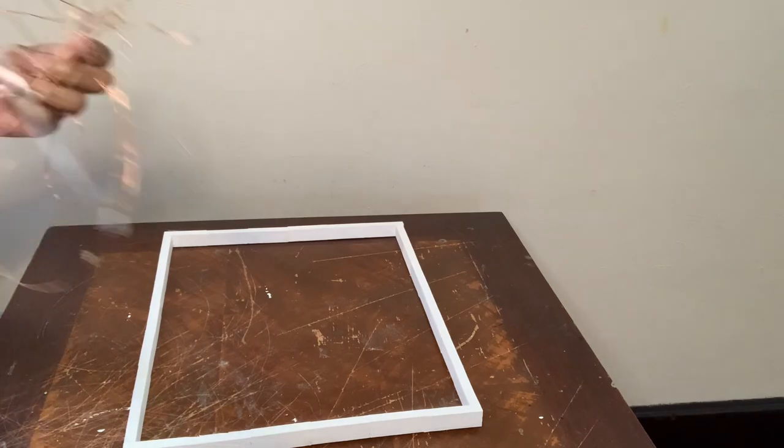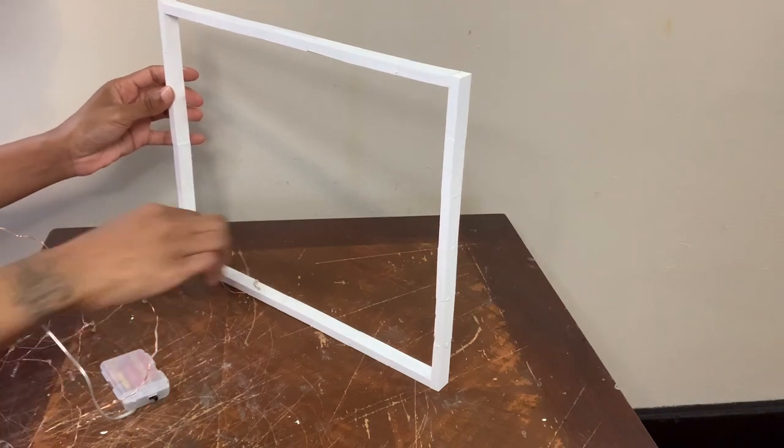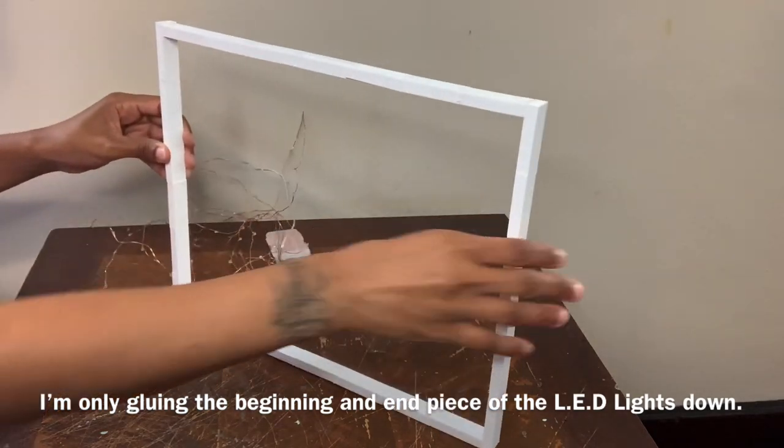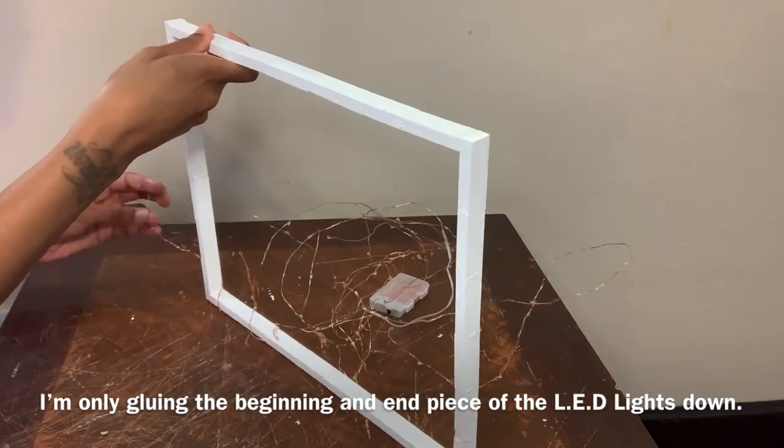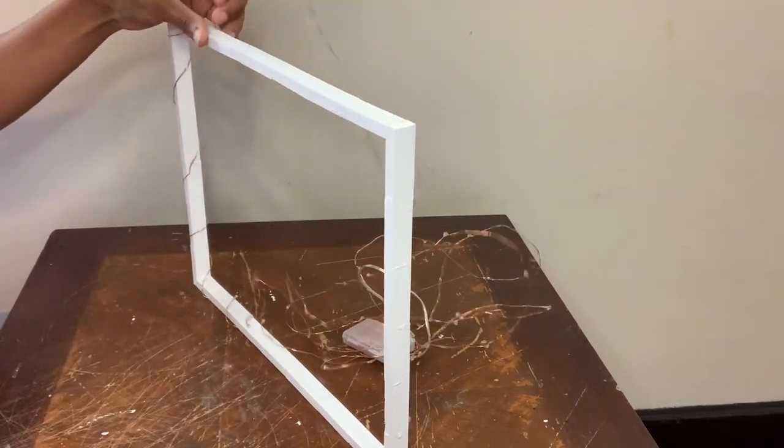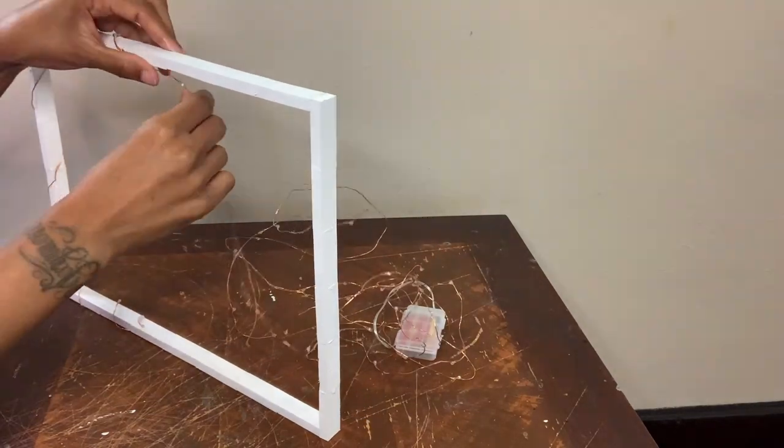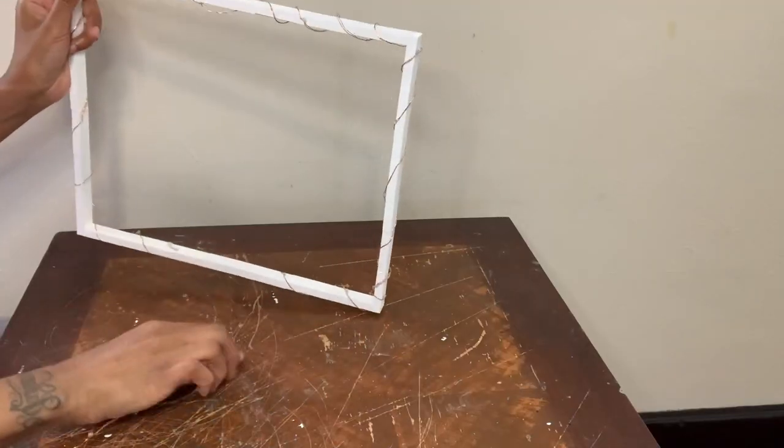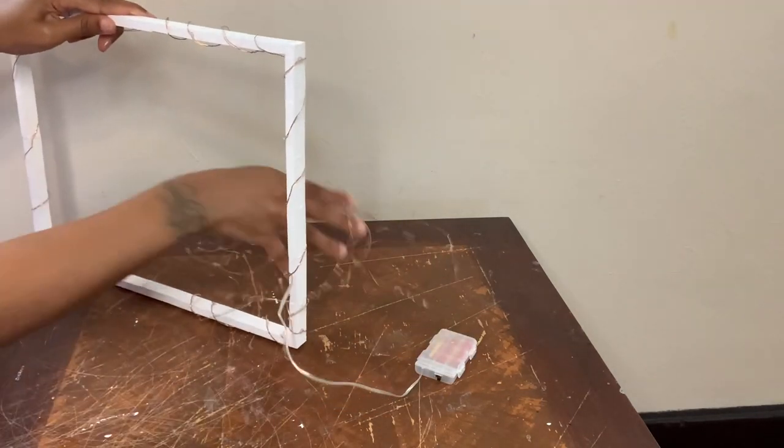So next I'm taking these red LED lights that I purchased from Amazon, and I'm just going to wrap them around my blocks. Now I'm going to stop right here and then go back in the opposite direction until I end up where I started.